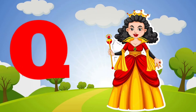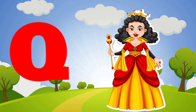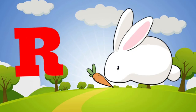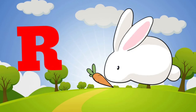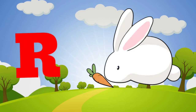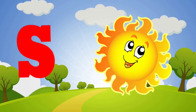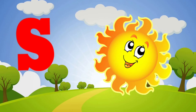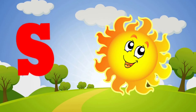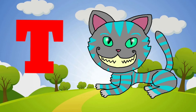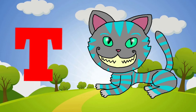Q is for queen, q-q-queen. R is for rabbit, r-r-rabbit. S is for sun, s-s-sun. T is for toad, t-t-toad.